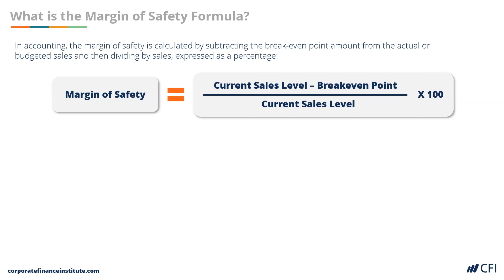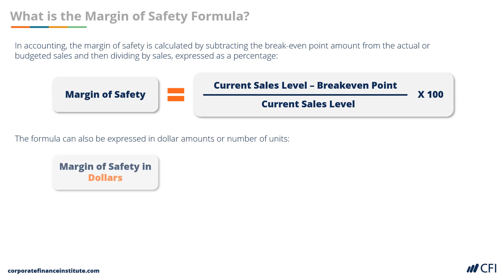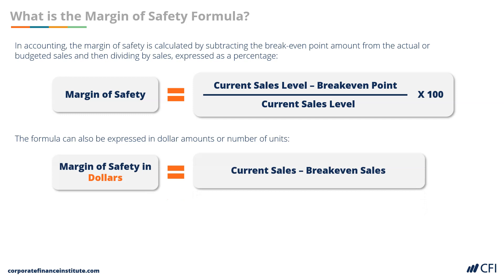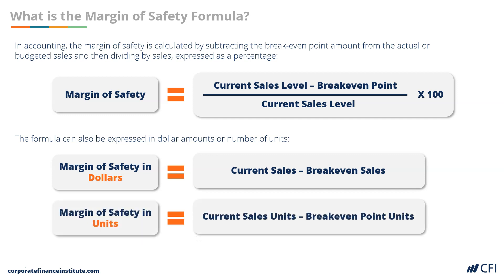The formula can also be shown in dollar amounts or number of sales units. Margin of safety in dollars is equal to current sales minus breakeven sales. Margin of safety in units is equal to current sales units minus the breakeven point of sales units.